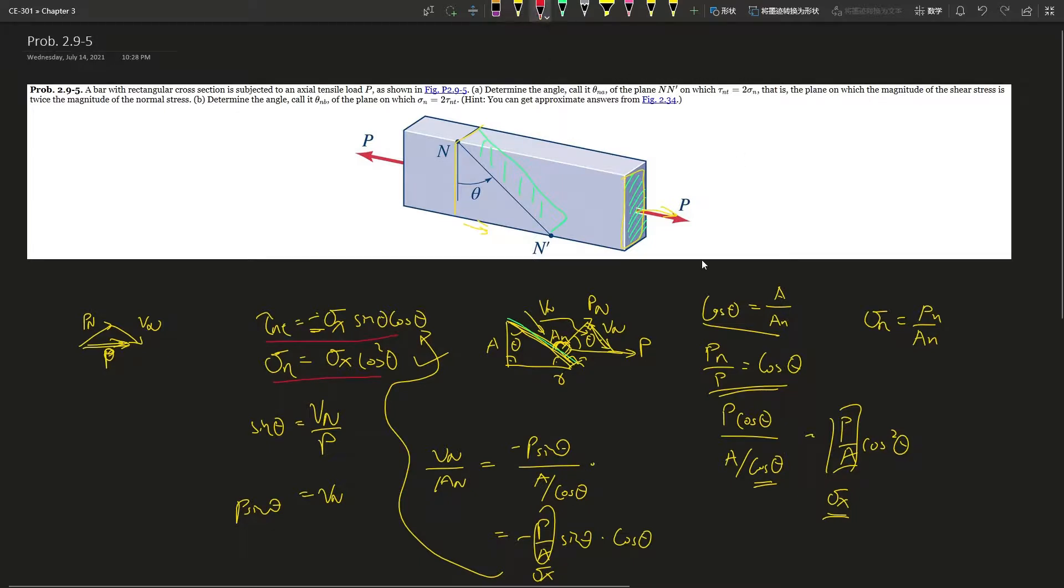So now we've talked a lot. Now we understand where these two equations come from. You should be able to solve this problem without any trouble because now you would just plug it in. What is tau nt? Negative sigma x sine theta cosine theta equals two times sigma x cosine squared theta.